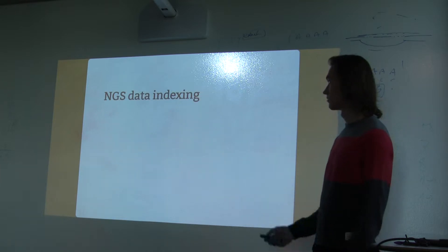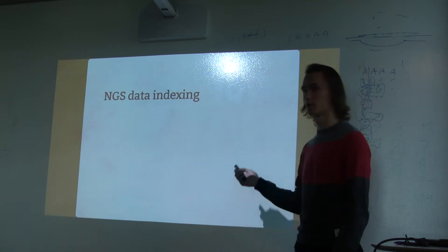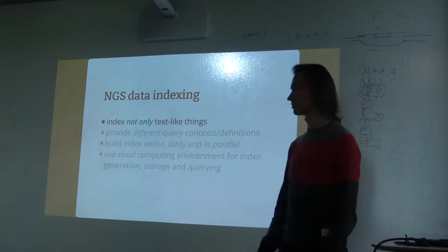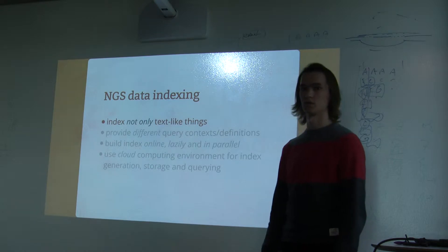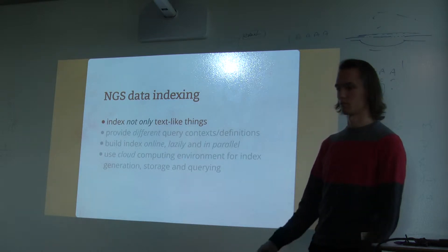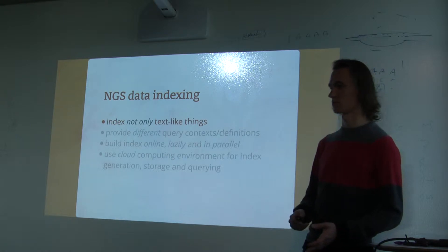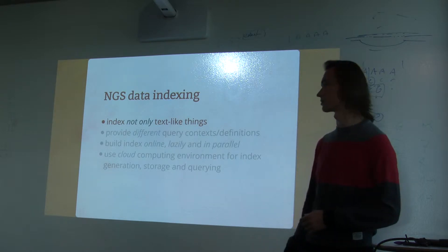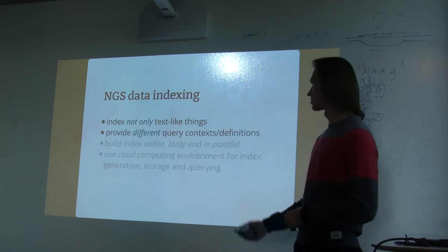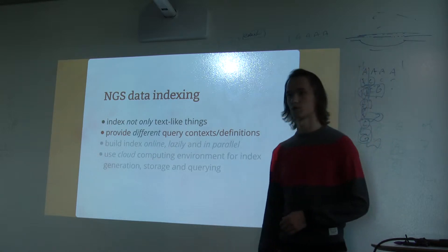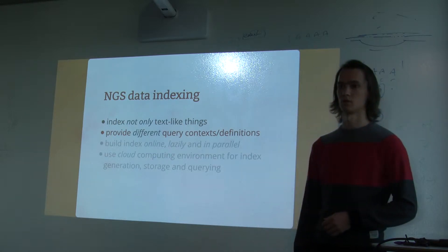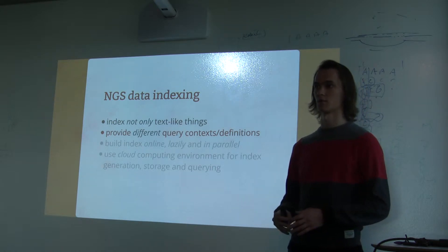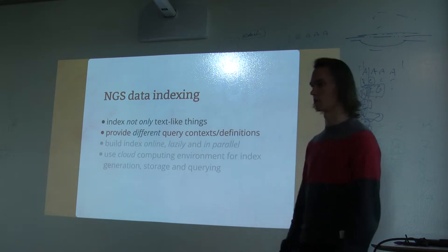First I want to tell a bit more detail about the first objective. We want to index not only text-based things, because sequence data can store meta-information like quality scores and such things. We also want to provide different query contexts and definitions, so that you could, for example, ask the index about sequences with quality above some value or any other criteria.